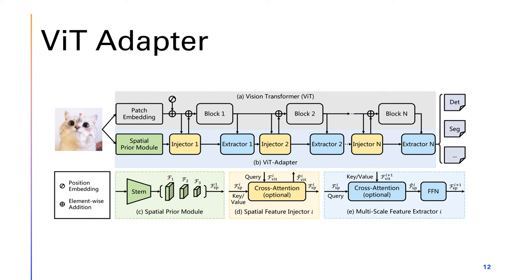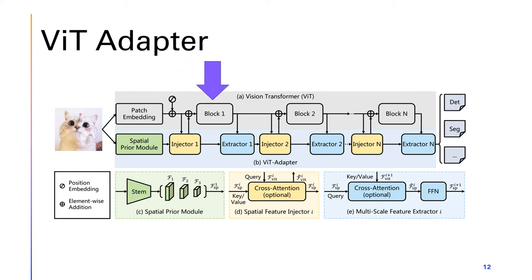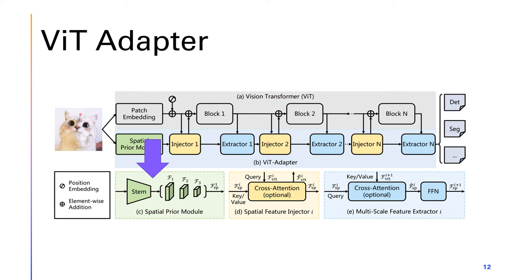Starting with the VIT, the image is divided up into 16x16 pixel patches. The patches are then flattened and projected into d-dimensional tokens, and positional embeddings are added. These tokens will be input through L number of encoder layers. For the VIT adapter, which runs in parallel, the image is input into a spatial prior module, which will learn features at three levels of resolution: one-eighth, one-sixteenth, and one-thirty-second. This is done with three convolutions and a max pooling layer, followed by stride-2 3x3 convolutions to double the channels and reduce the size of the feature maps, resulting in a feature pyramid.